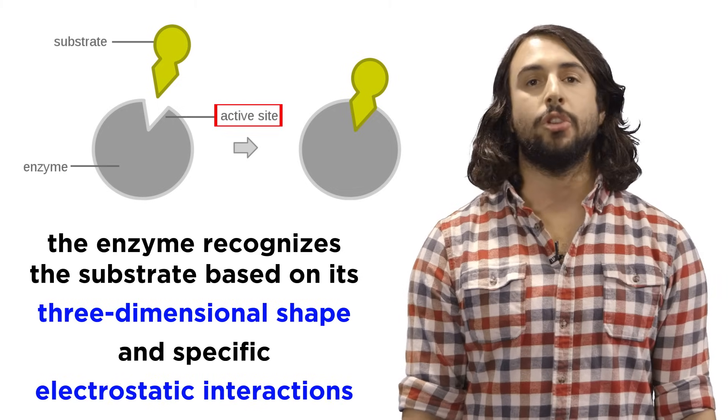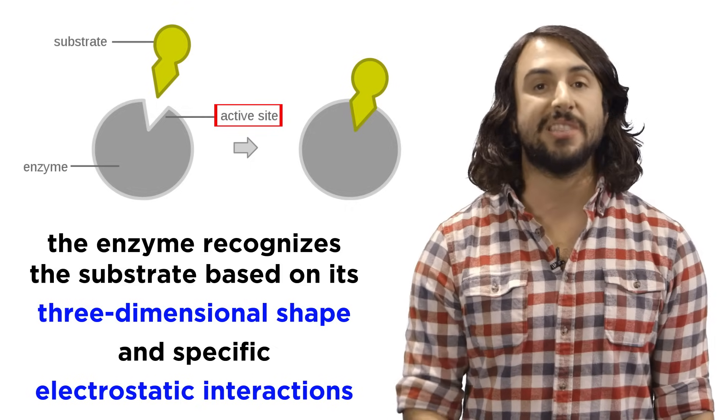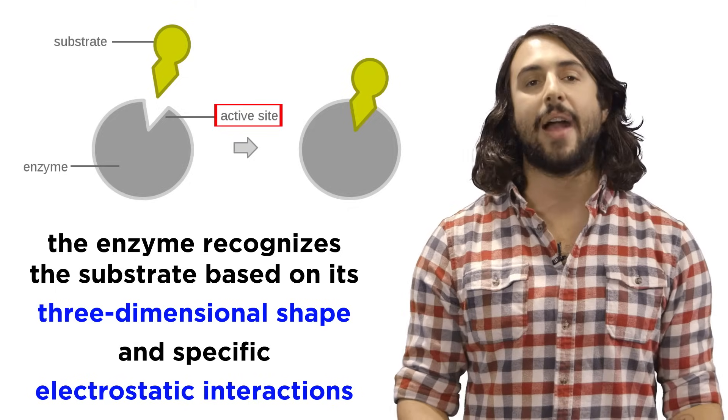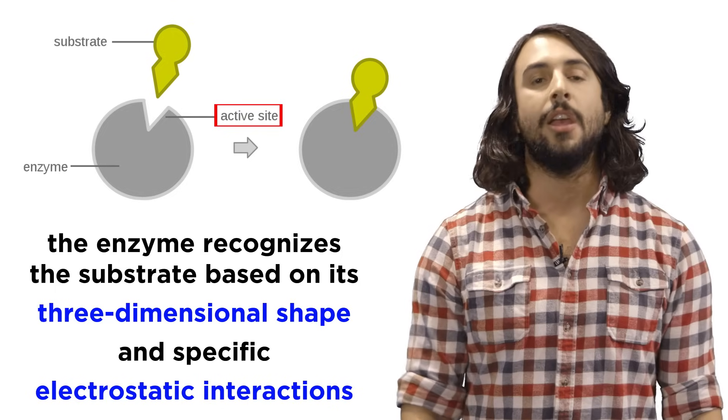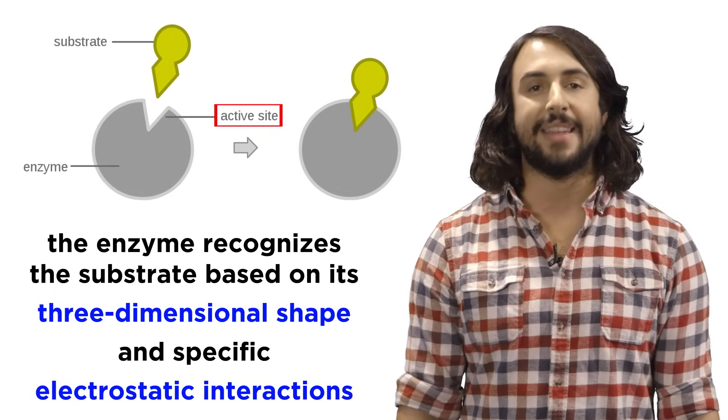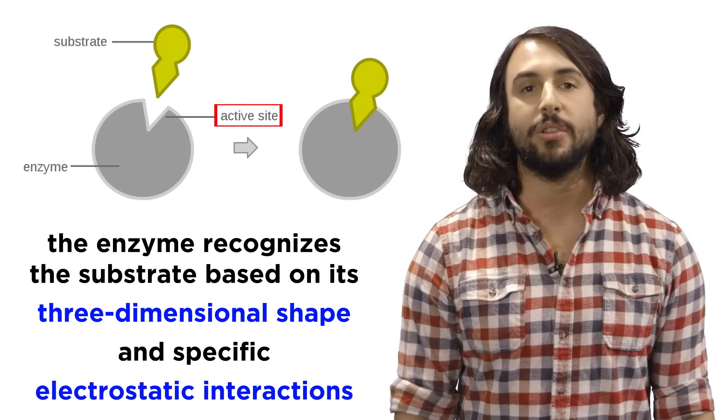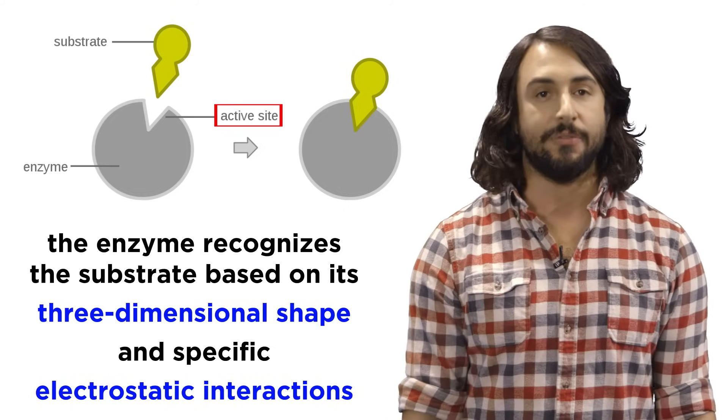The substrate will bind to the active site because it has just the right shape and composition to do so, meaning it is the right size, but it also has functional groups that make favorable electrostatic interactions with certain key residues in the active site of the enzyme, whether those are van der Waals interactions, hydrogen bonds, or any other interaction of this type.